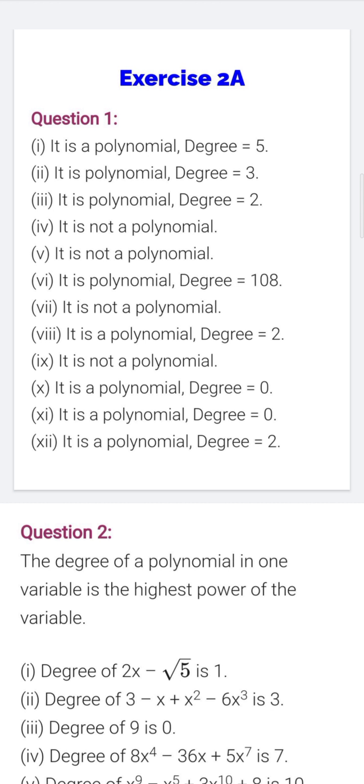Exercise 2A, question number 1. It is asked in the question, which of the expressions are polynomials? You can see that in your book, the first expression is given as x to the power 5 minus 2x cube plus x plus 7. You can see that whenever there is a given expression and the power of variable is a whole number, it is a polynomial. So we will decide that it is a polynomial. What is degree? You should understand it first. The highest power of the variable in a polynomial is called its degree.